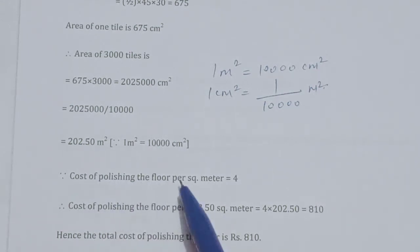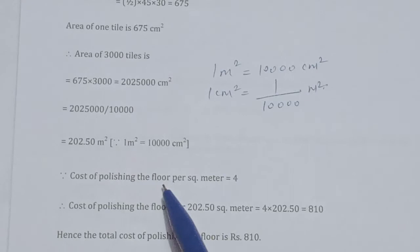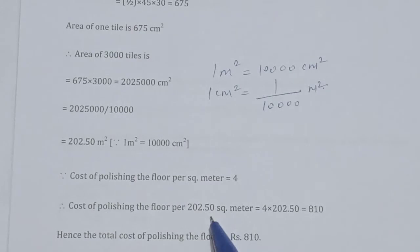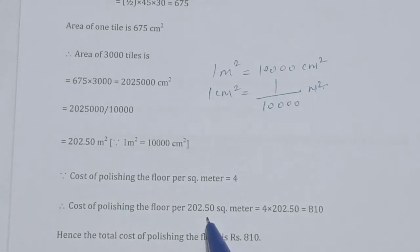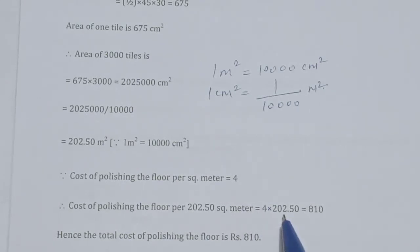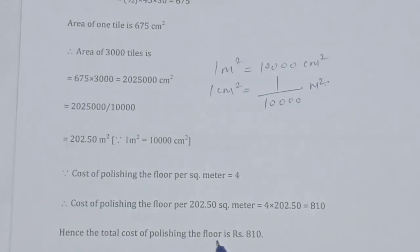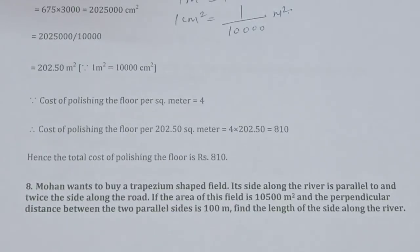The cost of polishing the floor is Rs. 4 per square meter. The total floor area is 202.50 m². So the total cost = 4 × 202.50 = Rs. 810. The total cost of polishing the floor is Rs. 810.